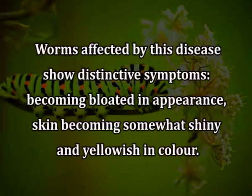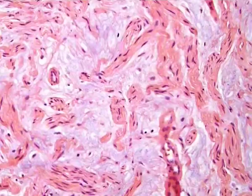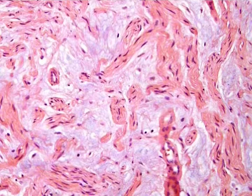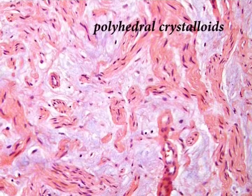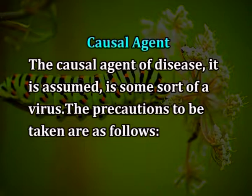Grasserie disease: Grasserie disease is caused due to excess of moisture in the castor leaves. Worms affected by this disease show distinctive symptoms, becoming bloated in appearance, with the skin becoming somewhat shiny and yellowish in colour, and the blood becoming turbid like pus instead of being clear as in ordinary worms. If the body fluid is examined under the microscope, it is found full of polyhedral crystalloids. They are also found in the different organs of the body, and as they are brittle, they can be easily crushed by a little pressure on the cover slip.